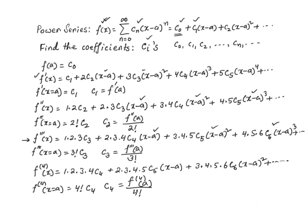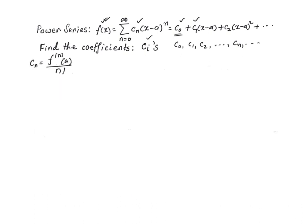By now you can see the pattern. The nth coefficient c sub n is nothing but the nth derivative of the function evaluated at x equal to a, divided by n factorial. This is a very important result.